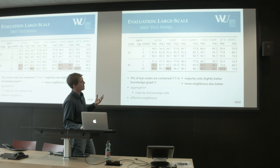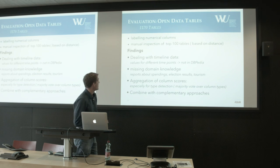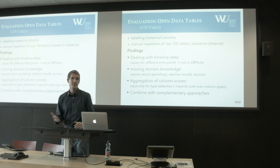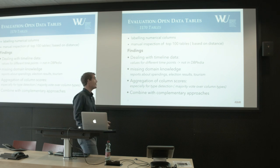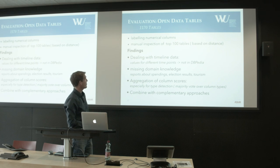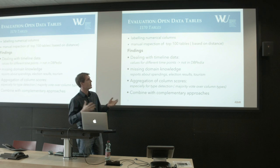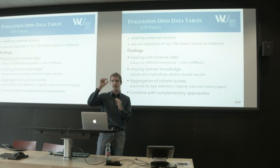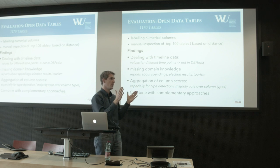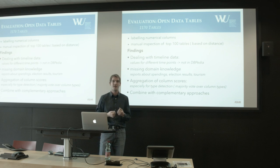Based on these results, we thought: cool, it works on DBpedia — let's test on the CSV tables and see how well we can label them. We used roughly 1,700 tables, tried to label all numerical columns, then manually inspected the top 100 — selected by the distance of the highest result, minimized, meaning the tables where our tool has the highest certainty.